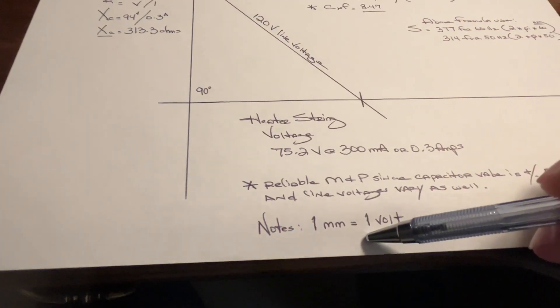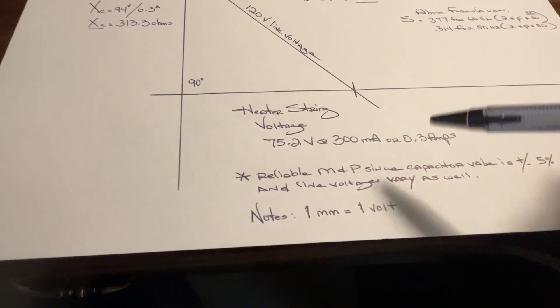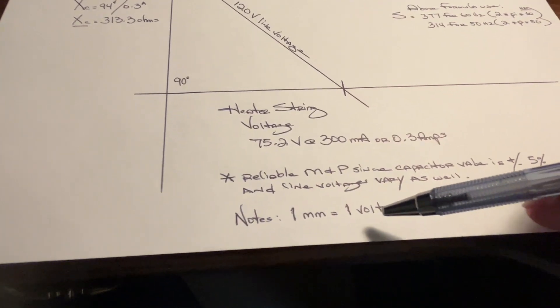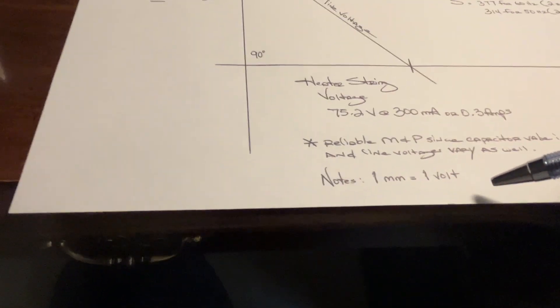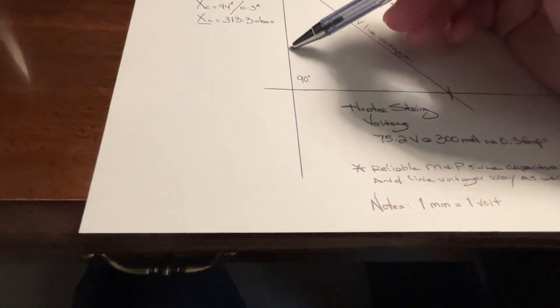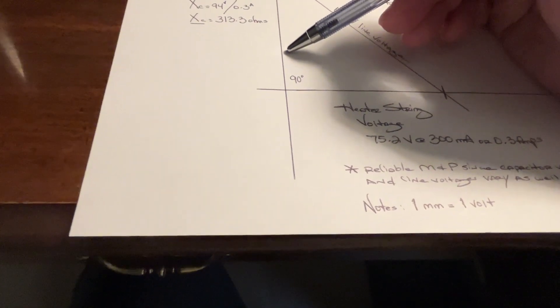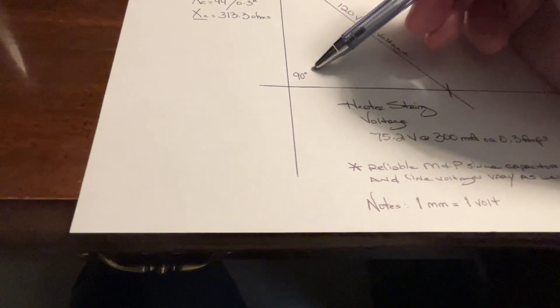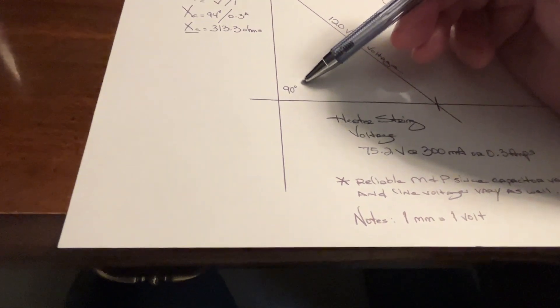First thing to denote, I'm going to use a metric ruler. One millimeter equals one volt. All I'm going to do is take a vertical line on the paper, a horizontal line. You can see they're 90 degrees apart.